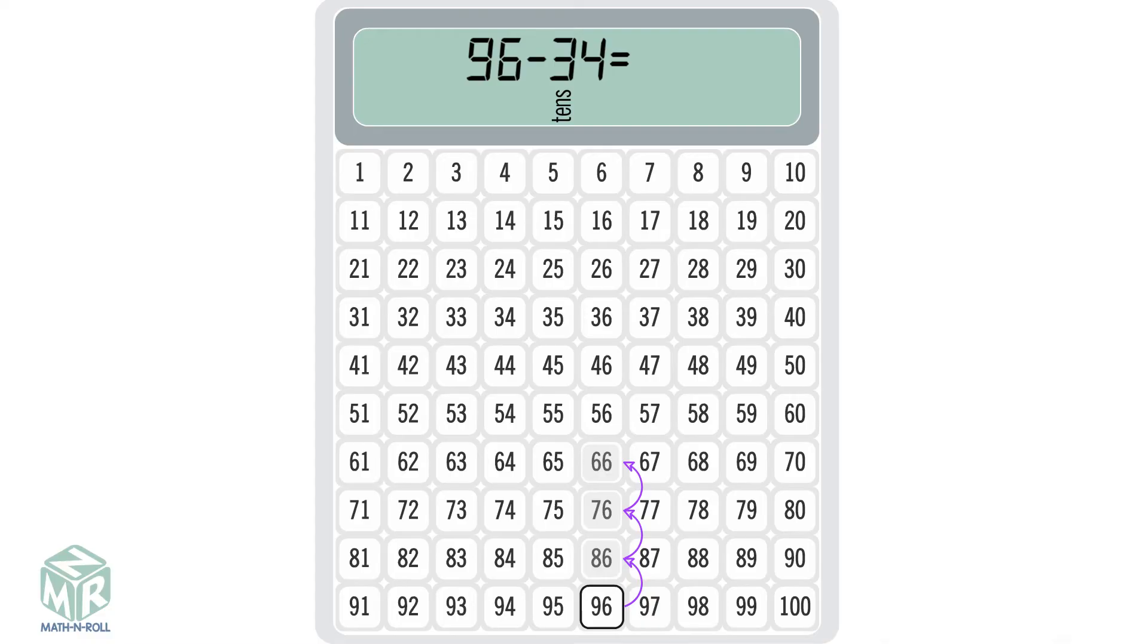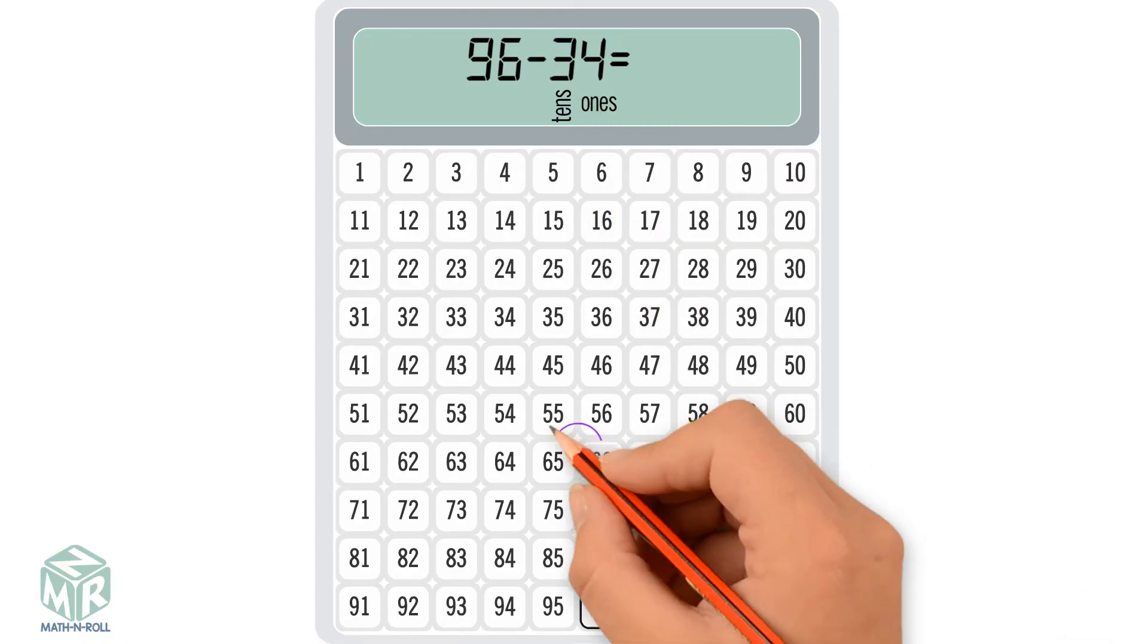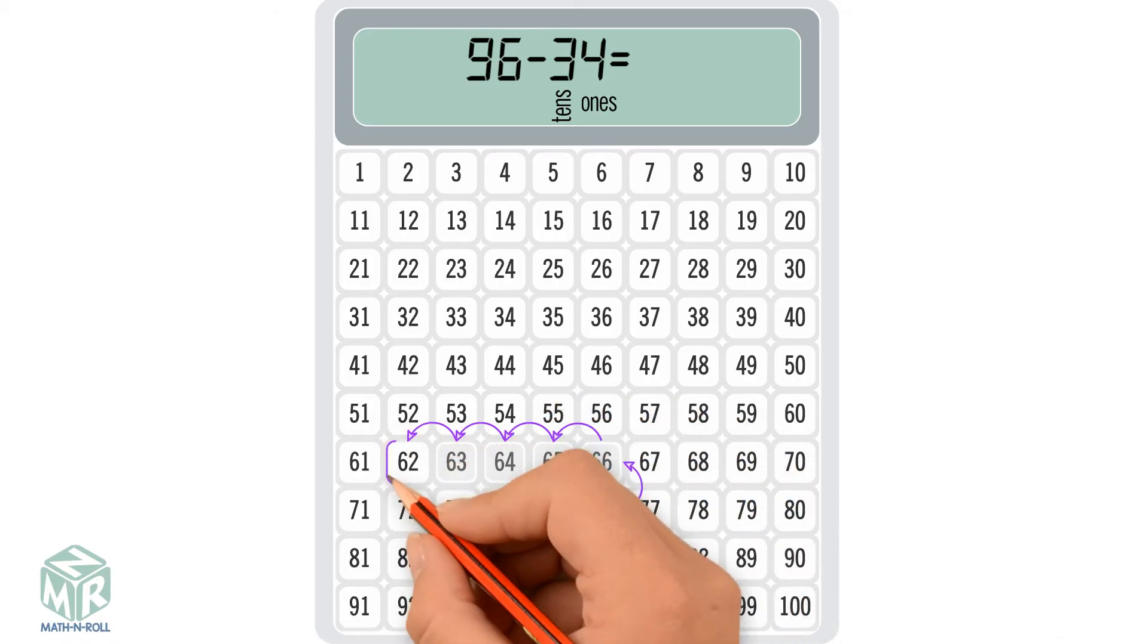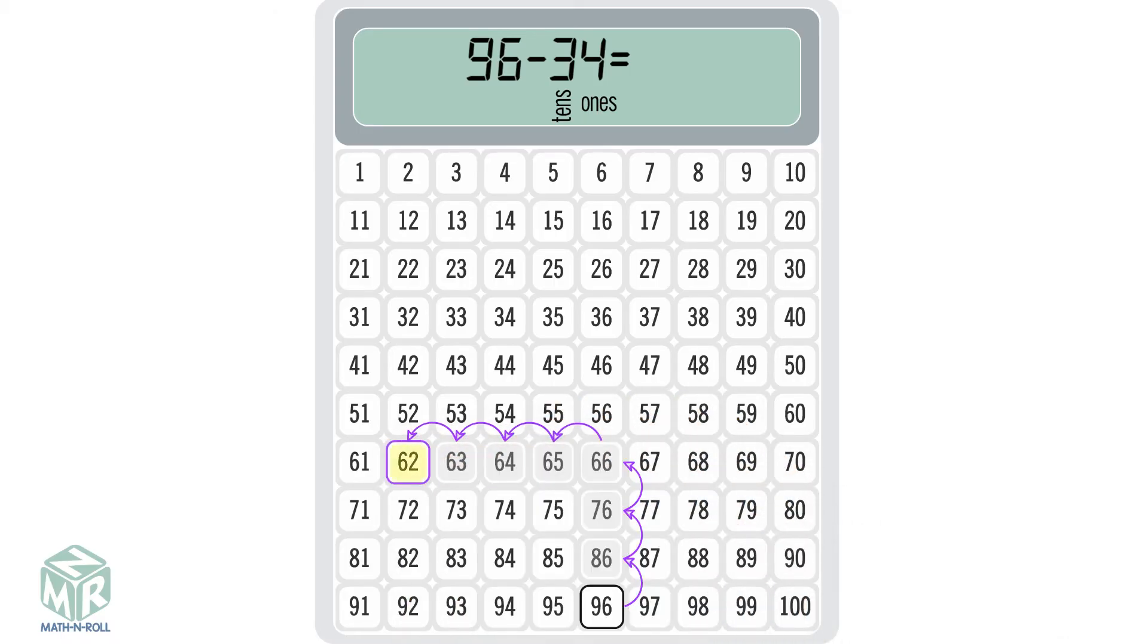34 has 4 ones. Continue at 66 and move left, or subtract 4 ones. We get 62, so 96 minus 34 equals 62.